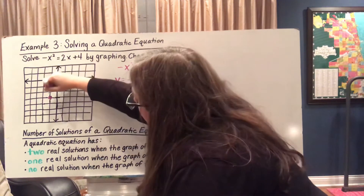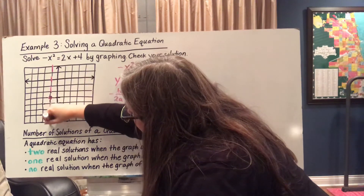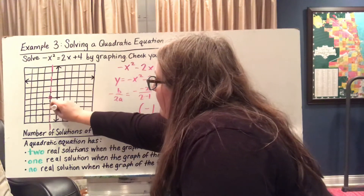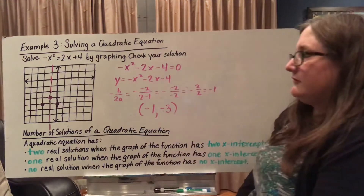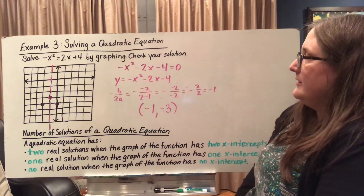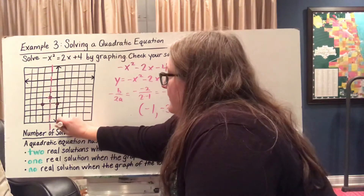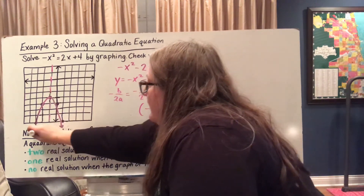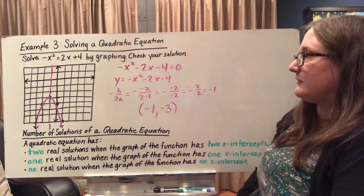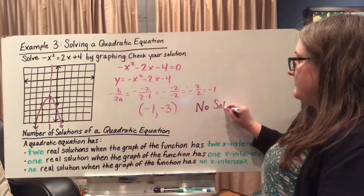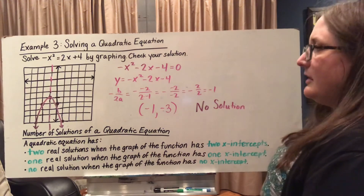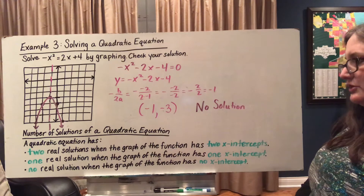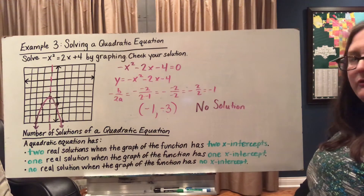This is also my axis of symmetry. If I plug in 0, I get -4. So (0, -4), and on the other side (-2, -4). If I plug in 1, I get -7, so also (-3, -7). It looks like our parabola never intersects the x-axis, so here I have no solution. The number of solutions of a quadratic equation can vary: two solutions if there are two x-intercepts, one solution if there's one x-intercept, and no solution if there's no x-intercept.